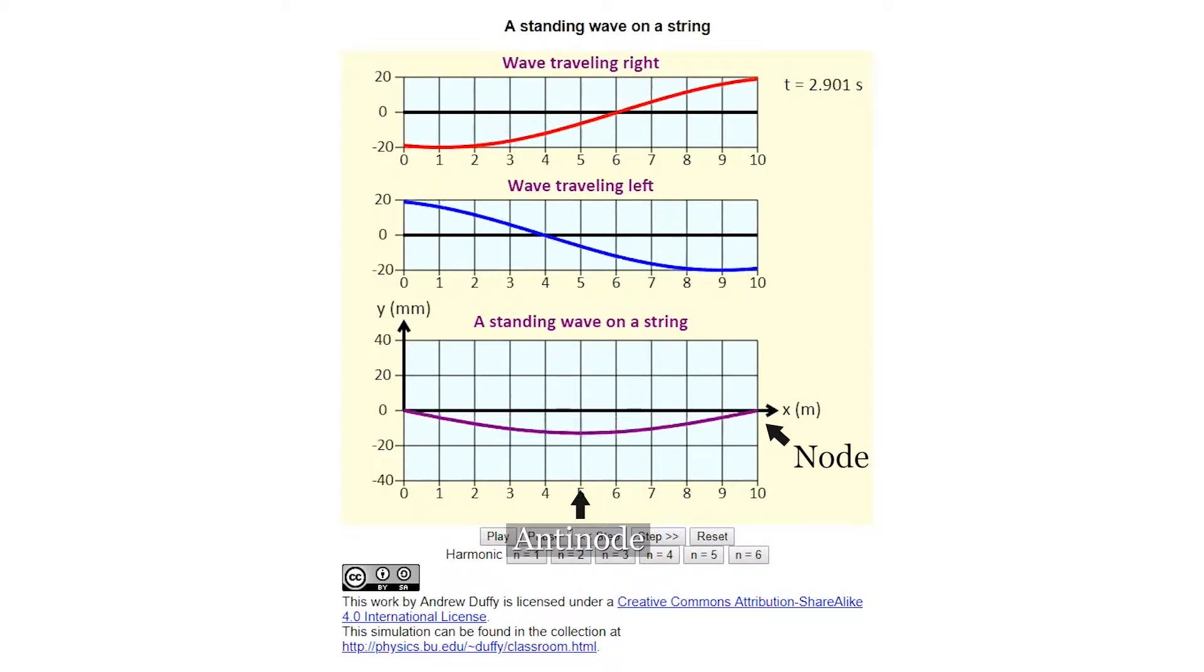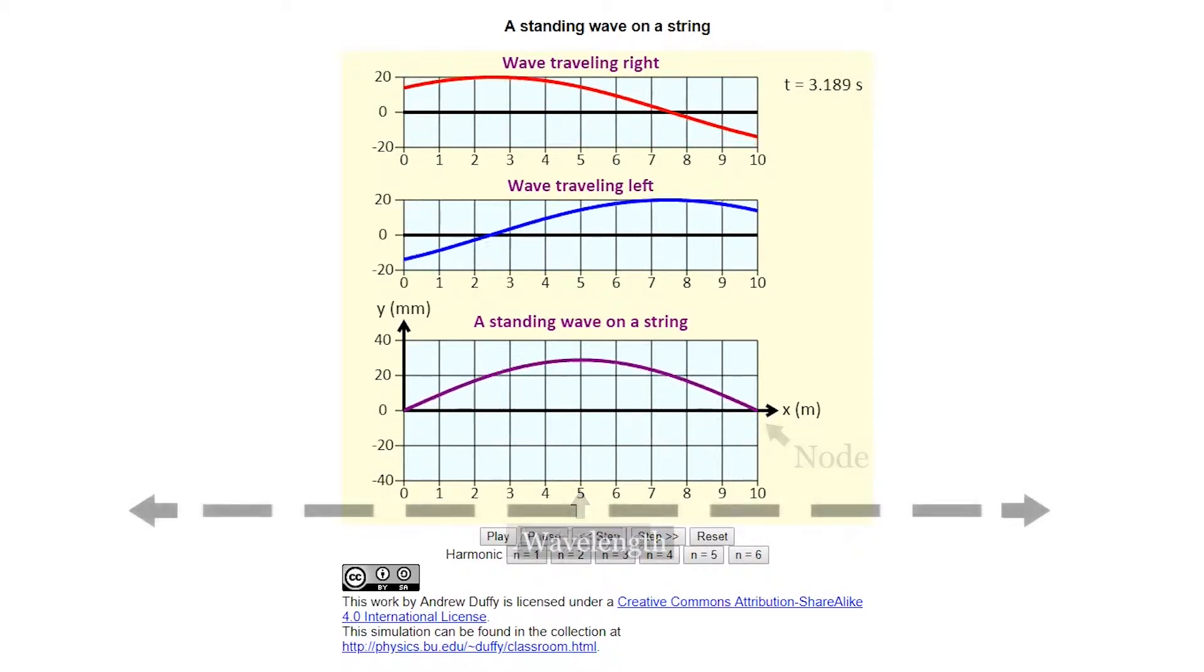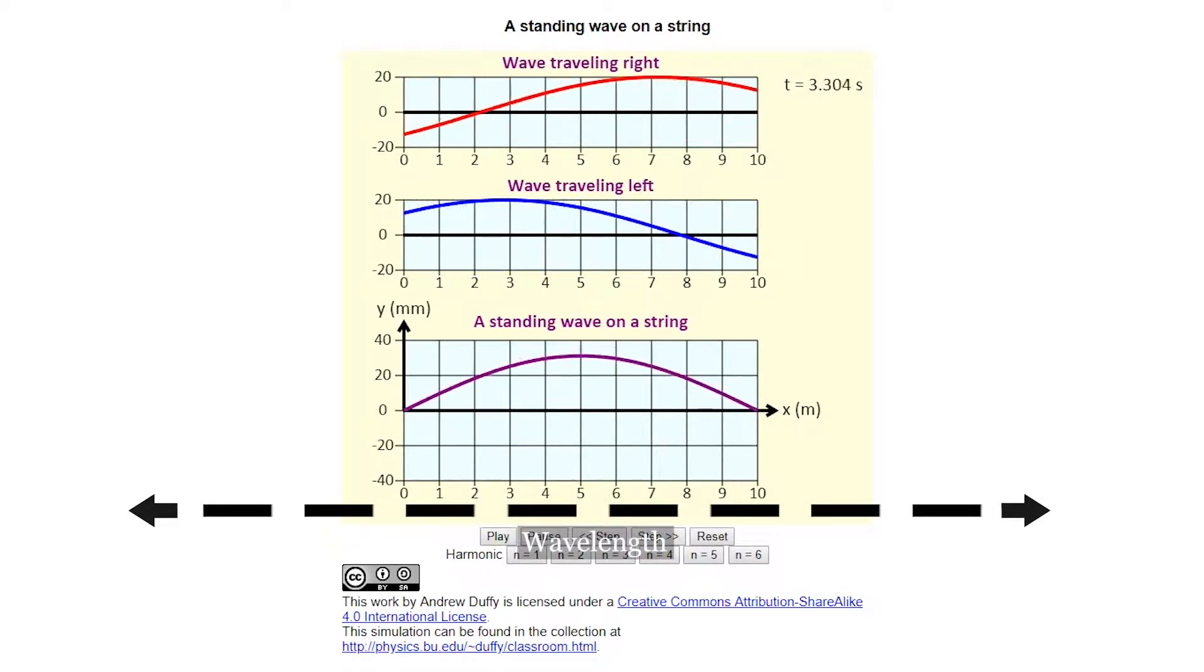The wavelength of a standing wave is closely related to the length of the string. Here, the length of string is twice the wavelength of the wave, which is known as the fundamental. It has one antinode right in the middle.